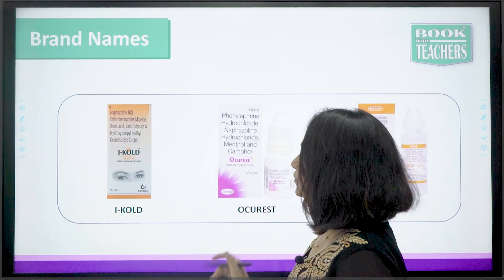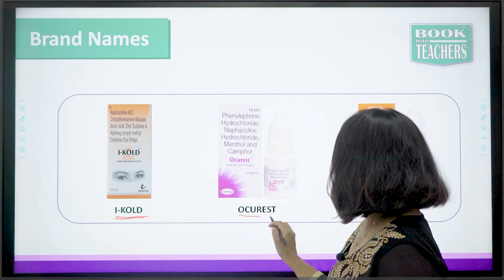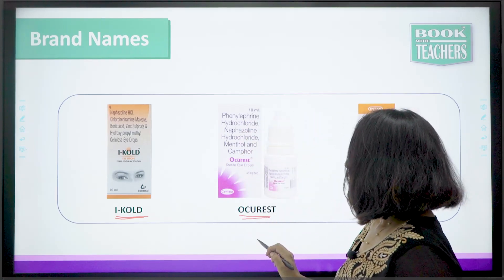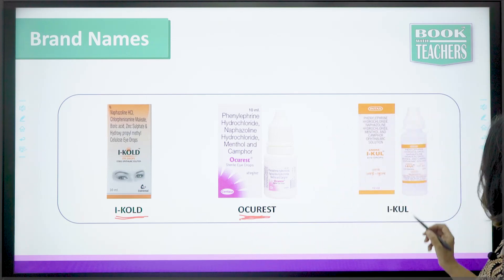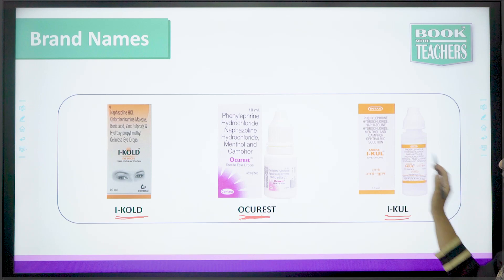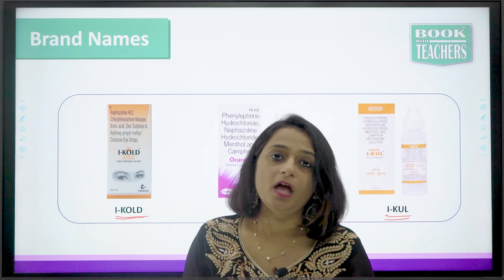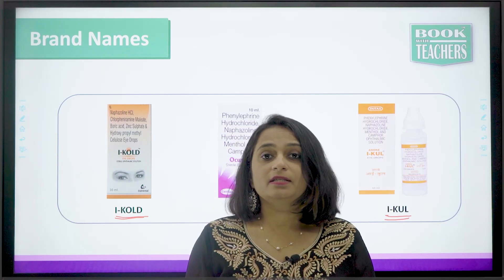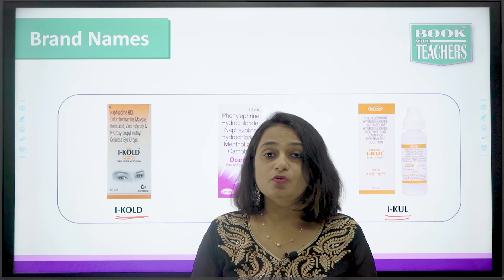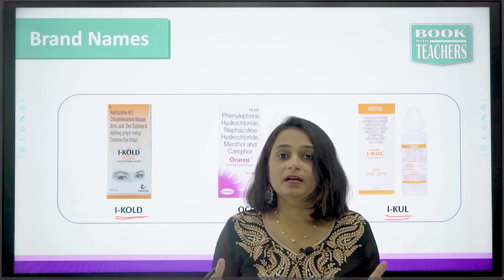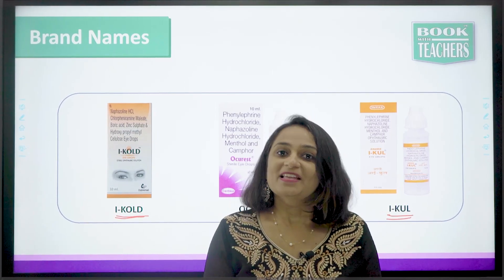The brand names available are Eye Cool — these are eye drops — Ocurest, also available as eye drops, and Eye Cool. Naphazoline is most prominently used in cases of conjunctivitis because of its sympathomimetic activity, as it causes vasoconstriction. So this is all about naphazoline. Thank you for watching.